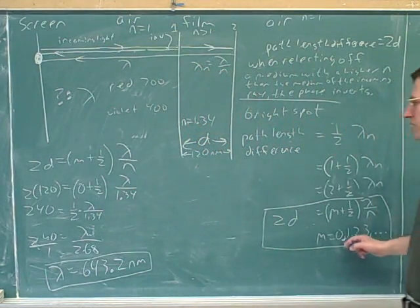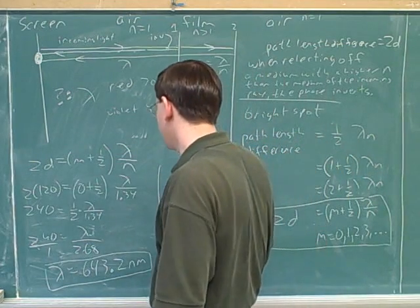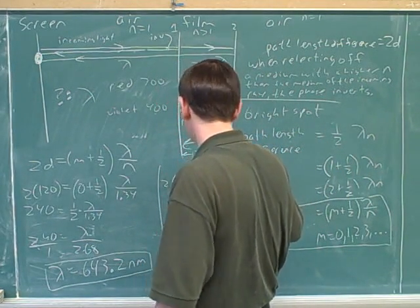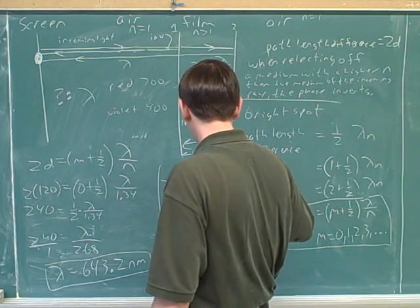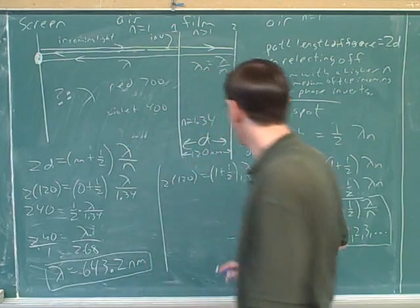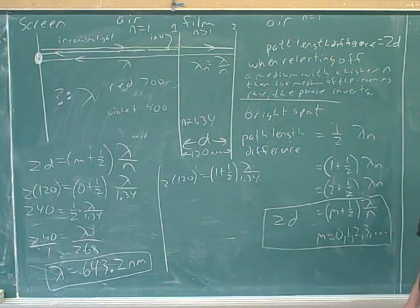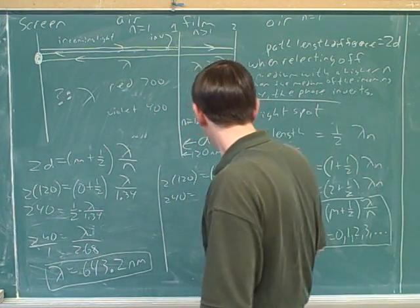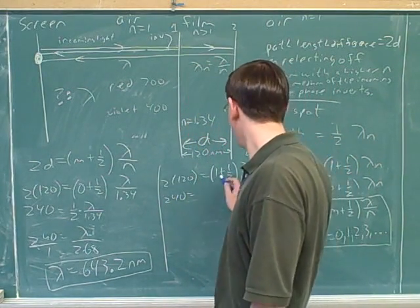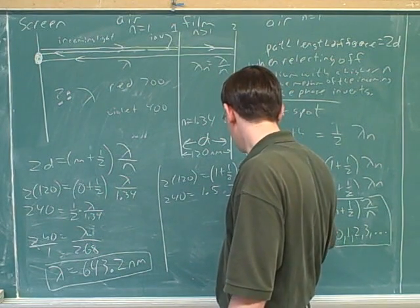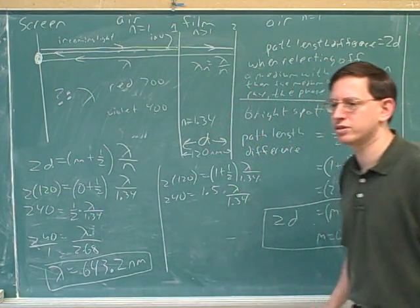On the other hand, let's see what happens if we plug in m equals 1. So, if you plug in m equals 1, we would get 2 times 120 equals 1 plus 1 half times lambda. Do you see where I got this equation from? I just plugged in m equals 1. Okay. So, we can go through this together. 2 times 120 would be 240. On the right-hand side here, we just have 1.5 times lambda over 1.34.